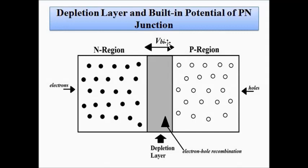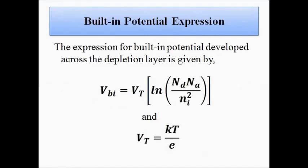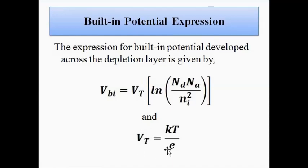Now let's look at the mathematical expression for the built-in potential. The built-in potential developed across the depletion layer is given by: VBI = VT × ln(ND × NA / ni²). Here, VBI is the built-in potential, VT is the thermal voltage given by kT/e, where k is the Boltzmann constant, T is the absolute temperature in Kelvin, and e is the electronic charge (1.6 × 10⁻¹⁹ coulombs).